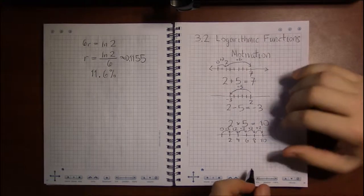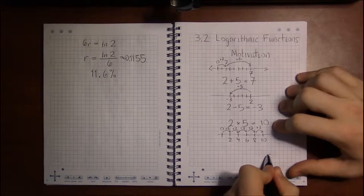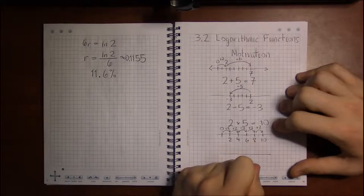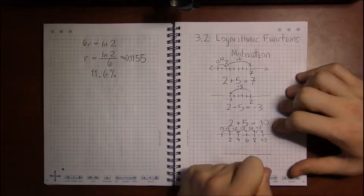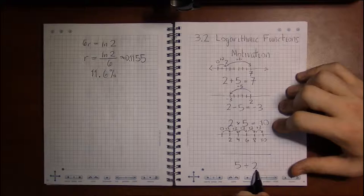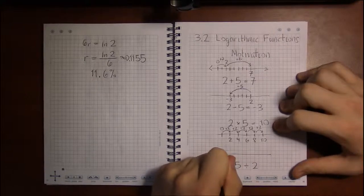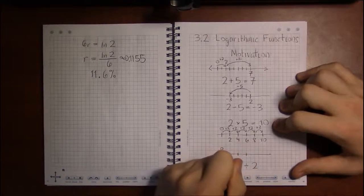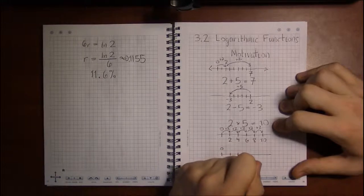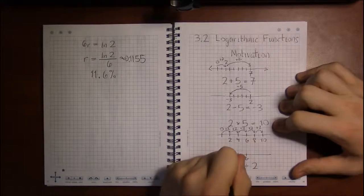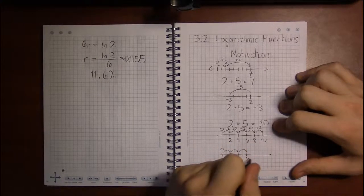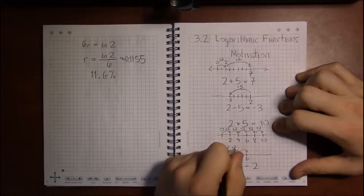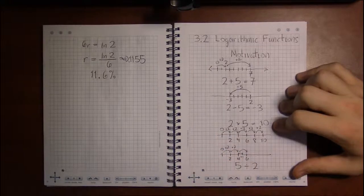And division asks the question, how many steps does it take to get to 5 in steps of 2? So, starting at 0, and counting by 2s, you can't exactly get to 5, counting by 2s, so you have to take a half step from 4 to 5, to finally get to exactly 5.